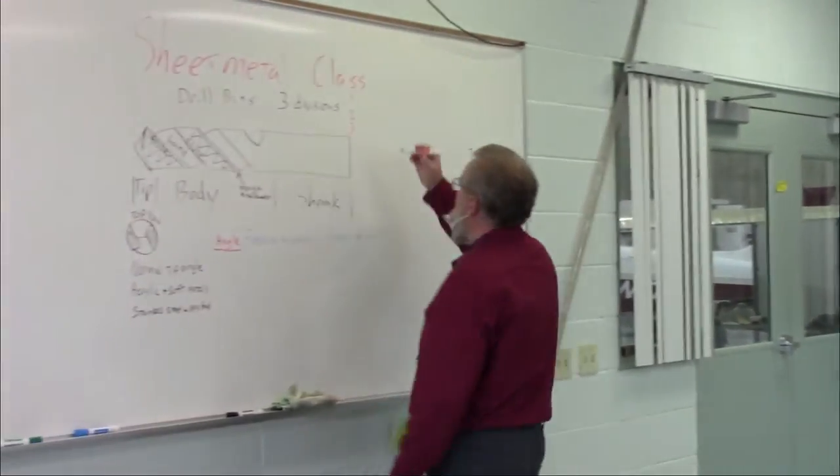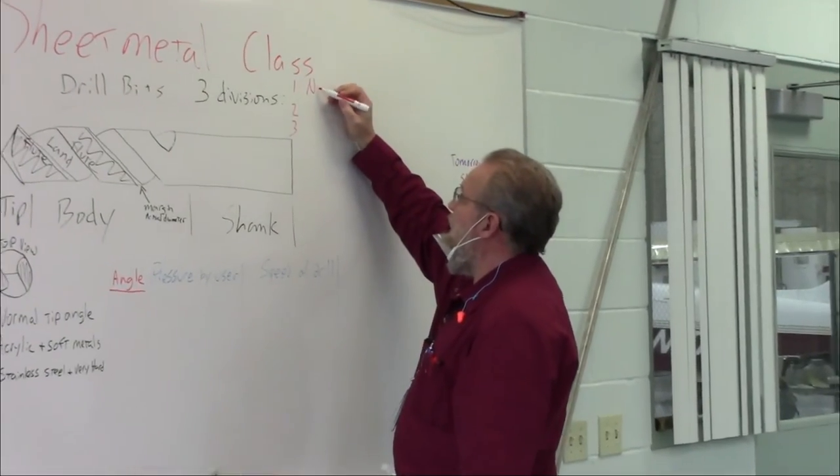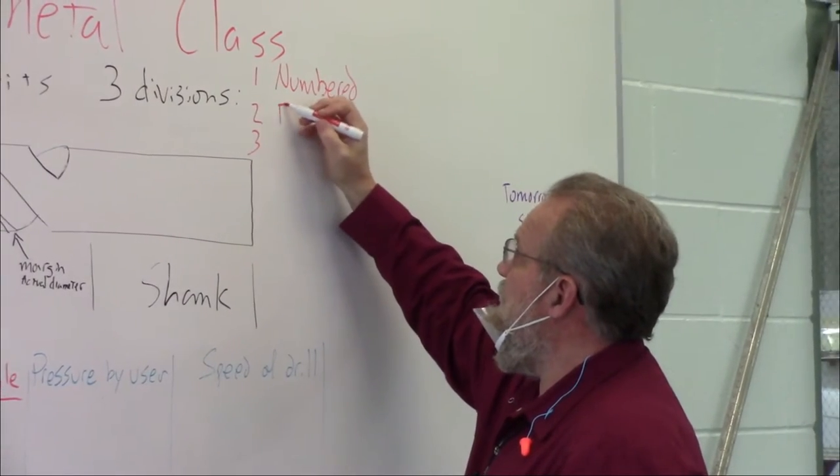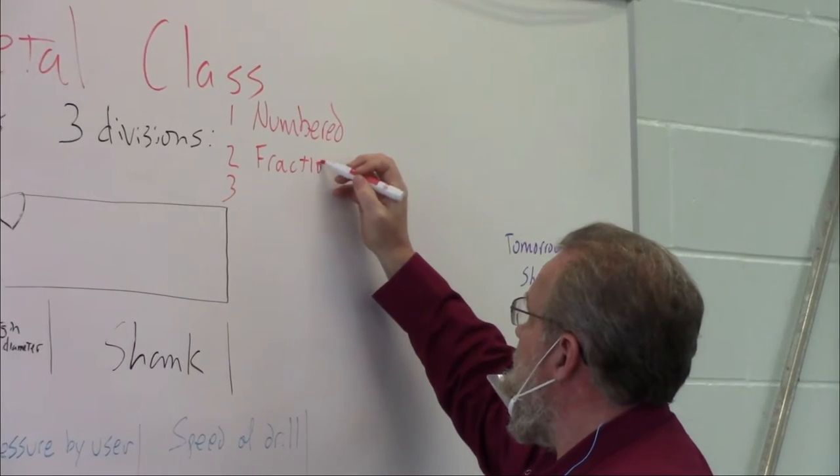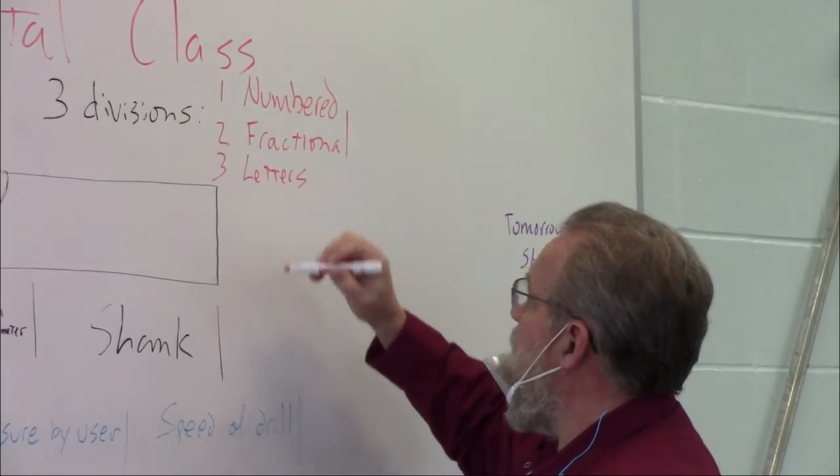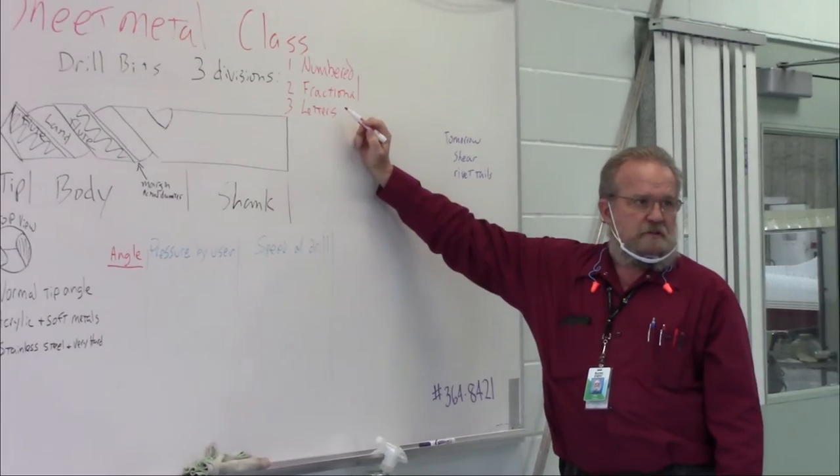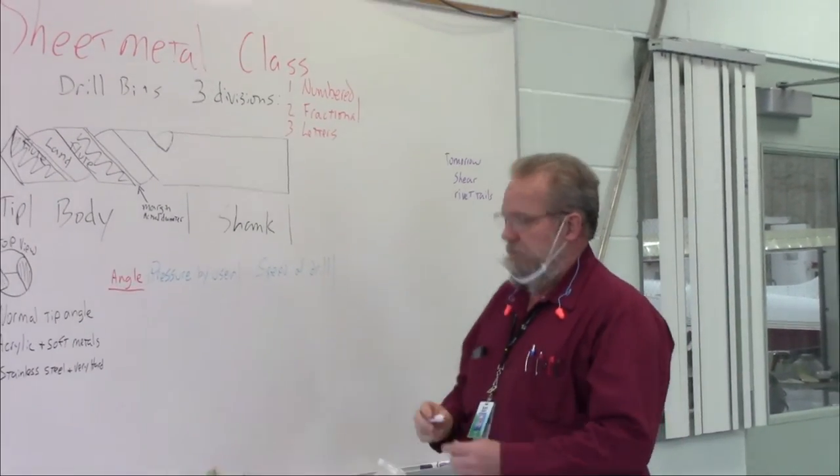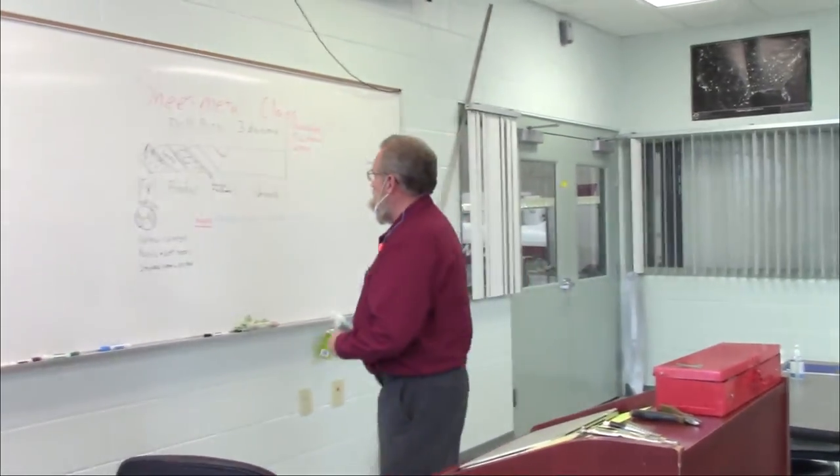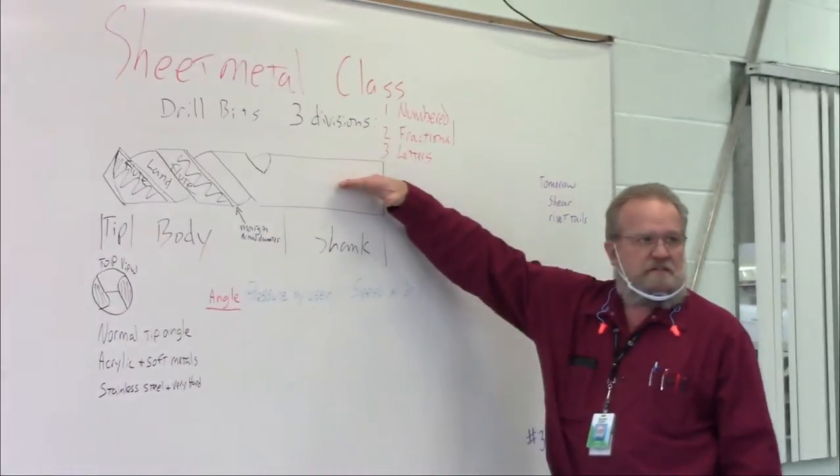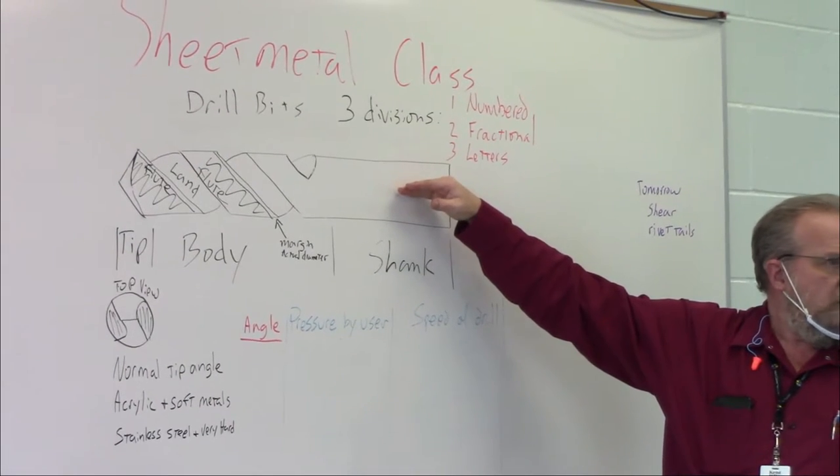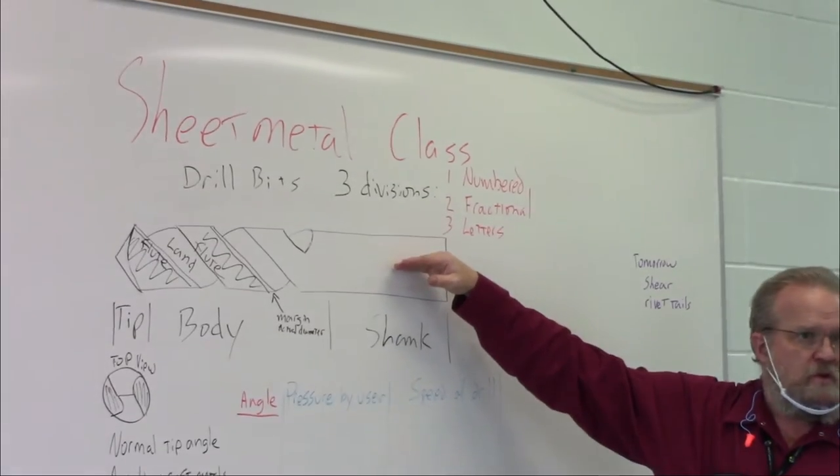So that is the types of classifications of drill bits. The divisions are, what's the first one? Starts with an N. Numbered. The second one is fractional. And the third one is? Lettered. You have to know this for your AAA exam, there are questions on there. Very good. The next thing, I'm gonna get this visual aid here. So this is a drill bit. Does everybody kind of understand what this is or do you want a drill bit to look at while we're going through this?